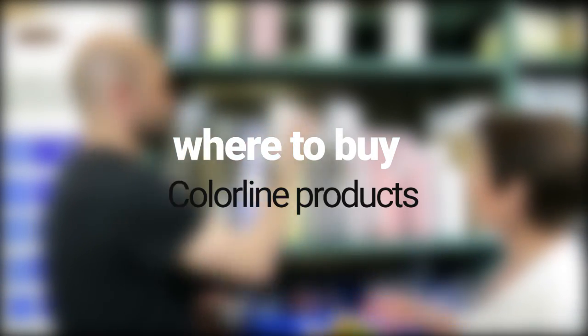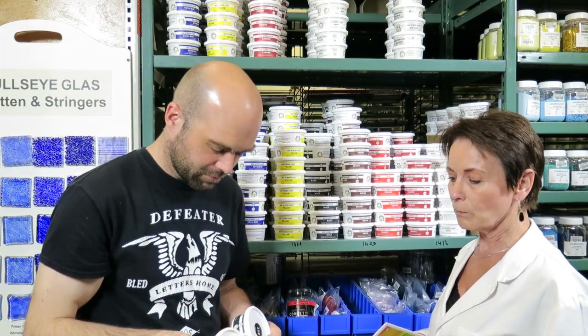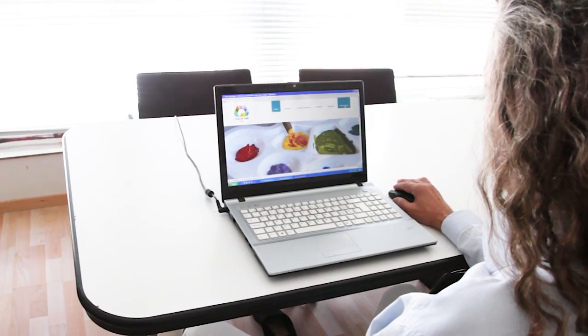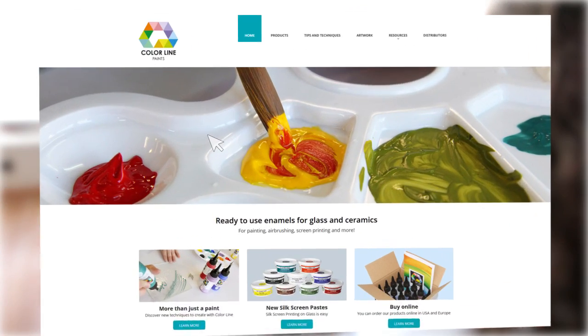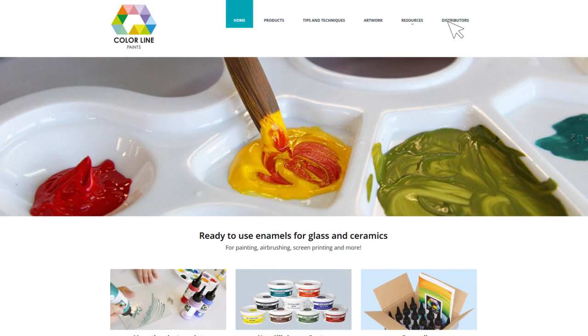On the Colorline website, you'll find a list of distributors and stockists in different countries throughout Europe and overseas. Bullseye Glass carry all Colorline products and sell them in the U.S. and Canada directly or through their distributors.